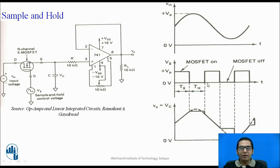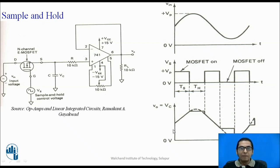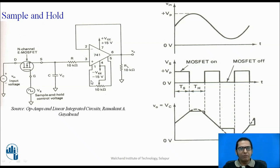At the next sampling instant, the transistor turns on again, the capacitor charges to the new input value, and that value appears at the output. During the subsequent hold period, that voltage is retained across the capacitor and held at the output. So the input is a continuous waveform, while the output follows the input during the sample period and remains at the last sampled value during the hold period. This is called the sample and hold circuit, designed using an operational amplifier, a transistor, and a capacitor.